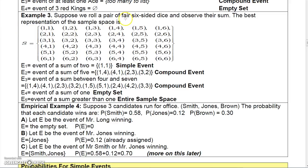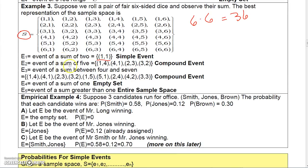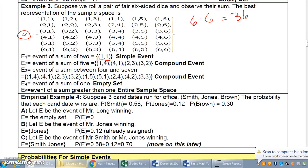Example three: roll a pair of fair six-sided dice and observe their sum. There are 36 possibilities, because there are six ways the first die can land, six ways the second die can land, and six times six is 36. If you're interested in the event of getting a sum of two, there's only one way — so that's a simple event. A sum of five has several ways: one-four, four-one, two-three, three-two — so that's a compound event. A sum between four and seven is also a compound event since there are several ways to achieve it. The event of a sum of one is impossible, so that's the empty set, and a sum greater than one covers the entire sample space.